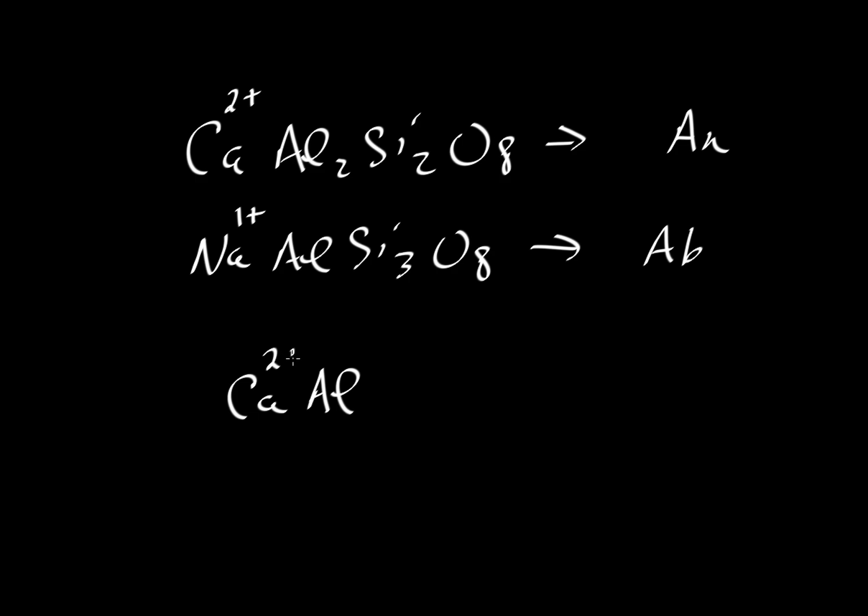We can have a calcium 2+ and an aluminum 3+ be exchanged for a sodium 1+ and a silicon 4+. Notice that both of these add up to a charge of 5. So if we're going to put sodium into the calcium slot we also need to add some silicon.